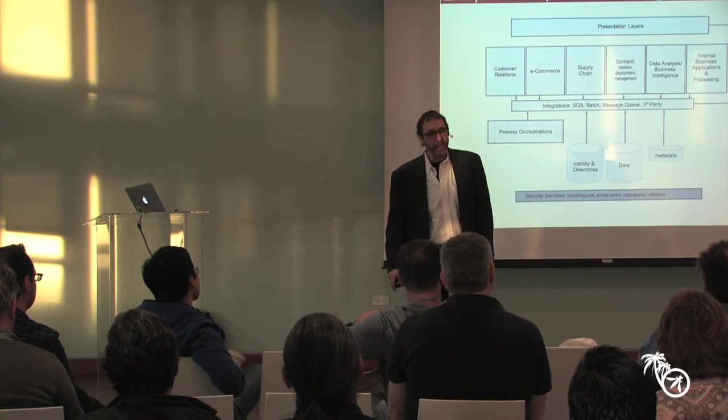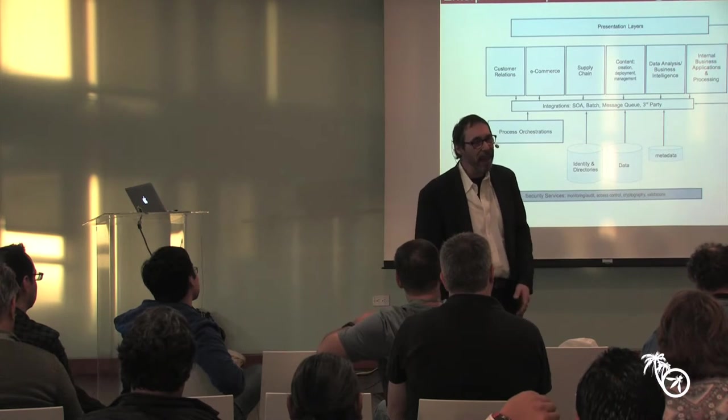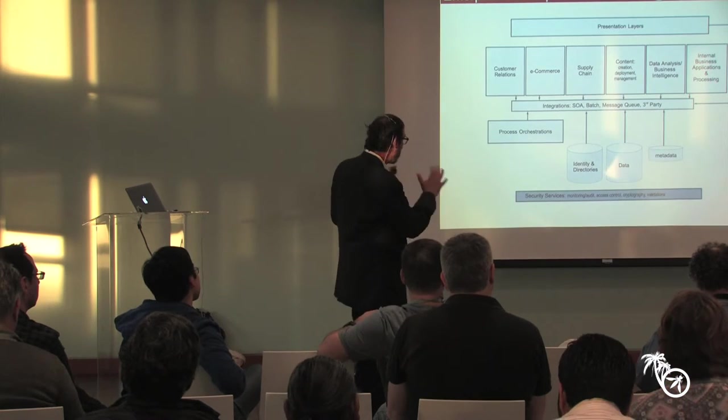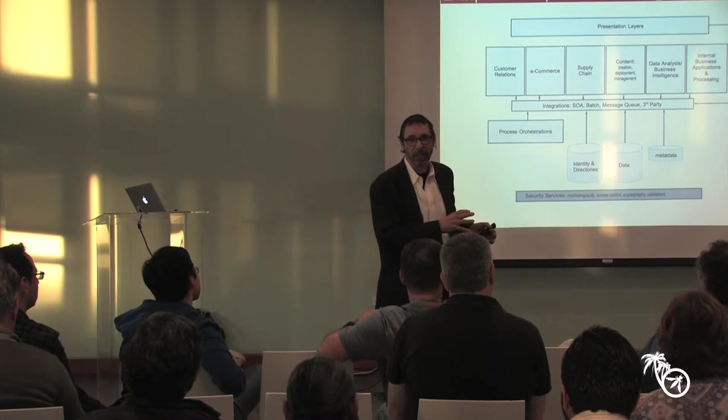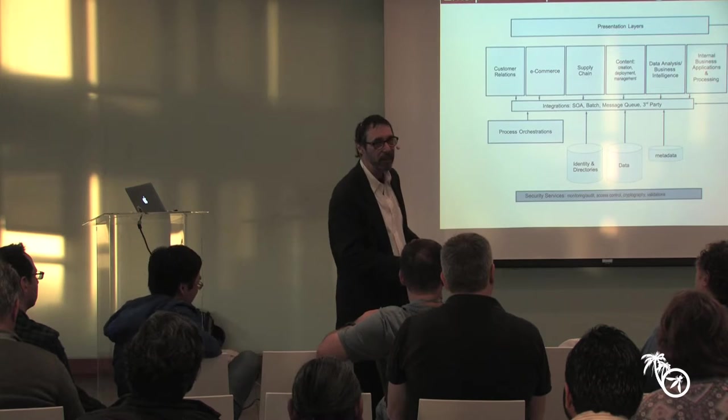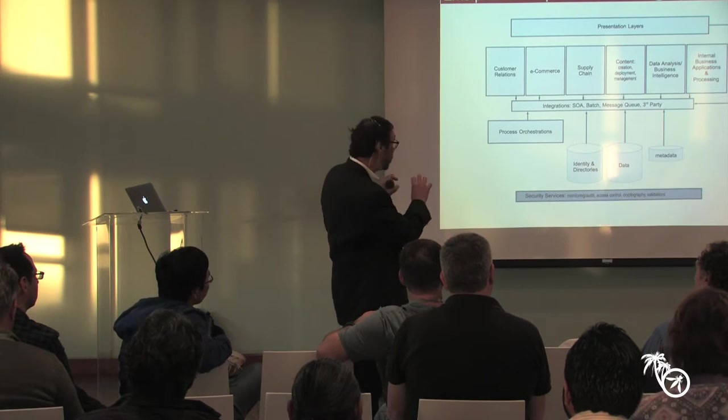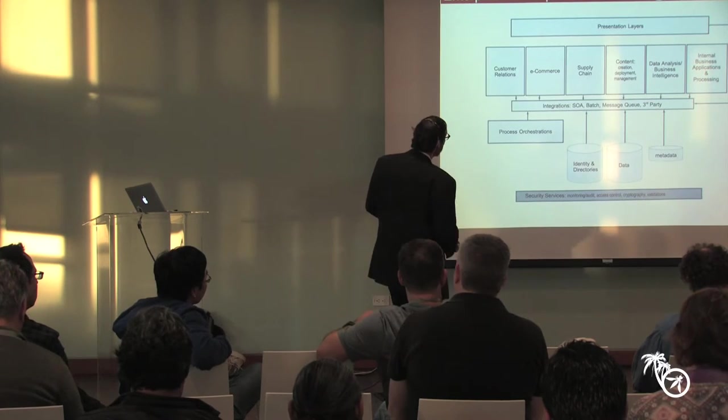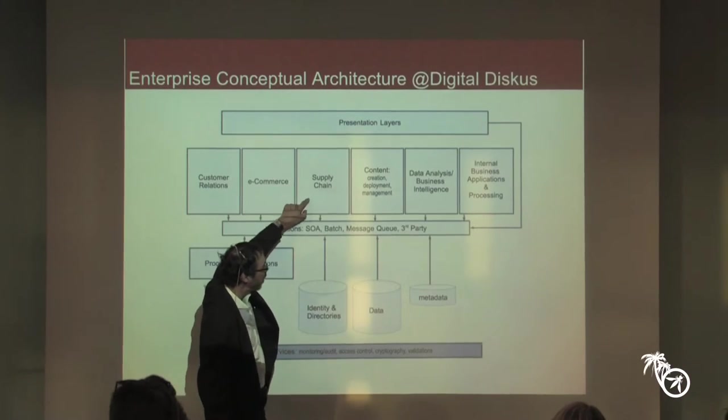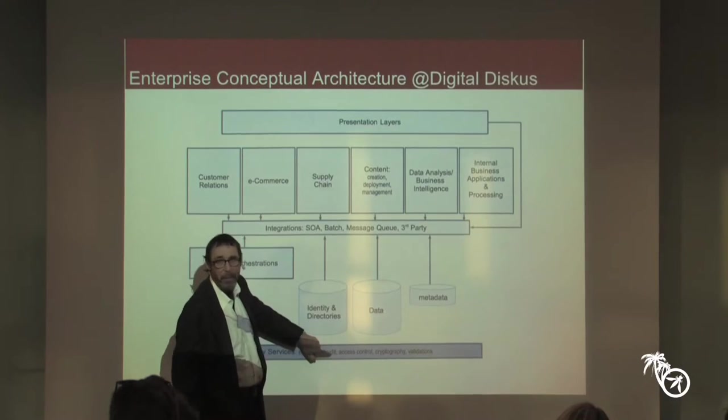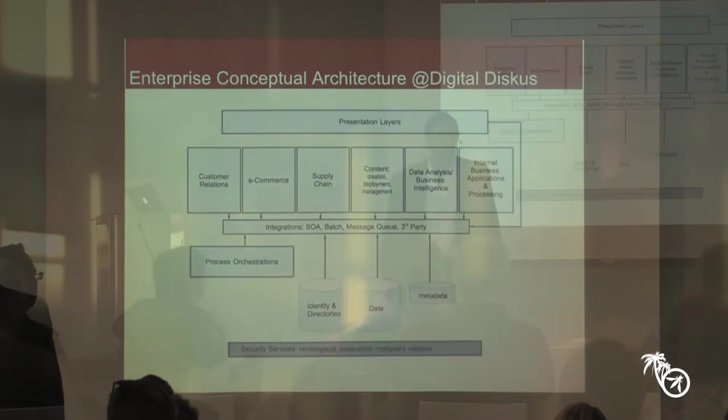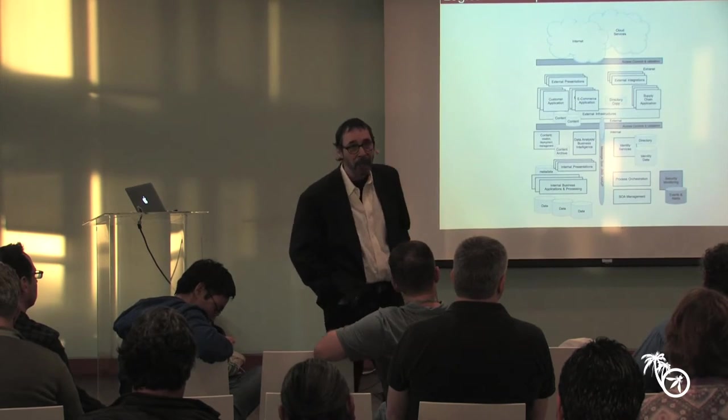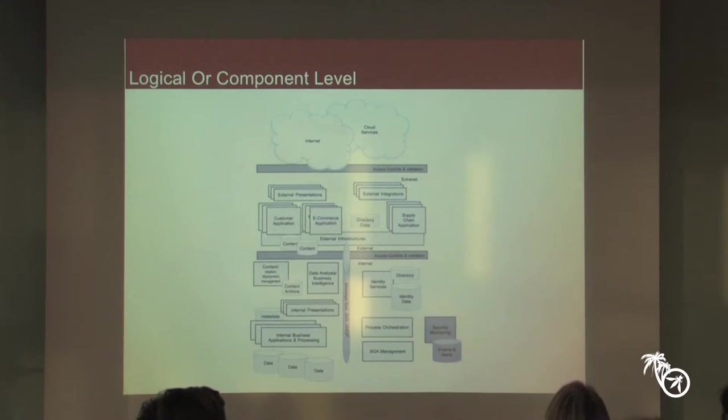So this is the way the enterprise architect may look at an enterprise. Because what they're interested in is really different than what you're interested in as a threat modeler. Their views are going to be really vastly different. Notice how things are really clumped in very businessy ways here. Supply chain, e-commerce. The only thing they've broken out is presentation layers, and then there's this troublesome little box at the bottom. Anybody ever seen the security box in an architecture?